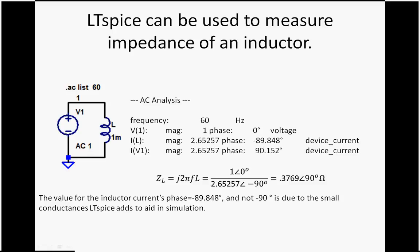We can just round that to 90. Well, when we divide the voltage by the current, we get 0.3769 ohms with plus 90 degrees phase.